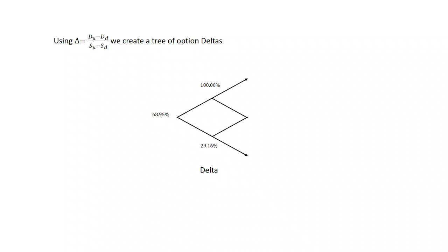We can interpret this, that the option right now behaves as if it's 0.6895 of a share. If the stock goes up, it's going to behave as if it's one share, and if the stock goes down, it's going to behave as if it's 0.2916 of a share.